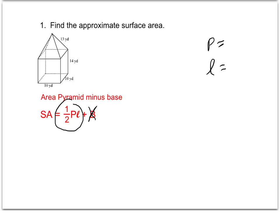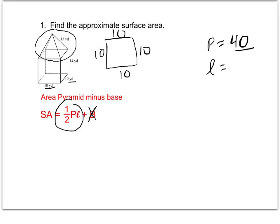I'm going to start with the perimeter. The perimeter of the base is the distance around the square base. We know that the base of the pyramid measures 10 on each side — 10 all the way around. So the perimeter is 10 plus 10 plus 10 plus 10, which equals 40.